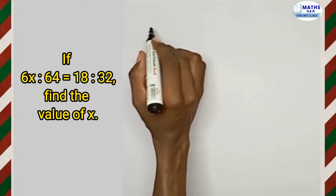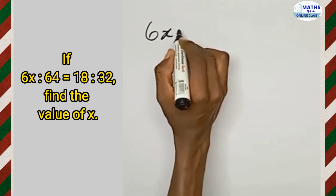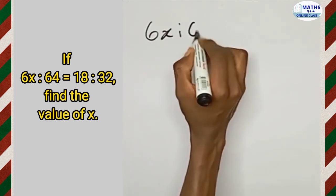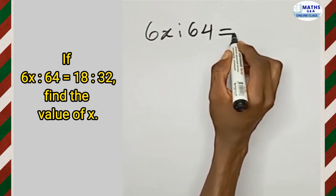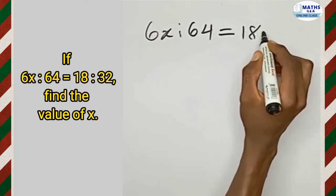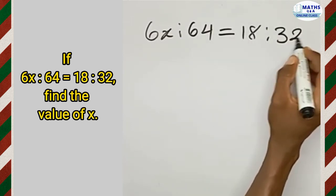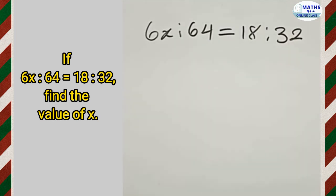So we have 6x is to 64, and that is equal to 18 is to 32. We're finding the value of x.